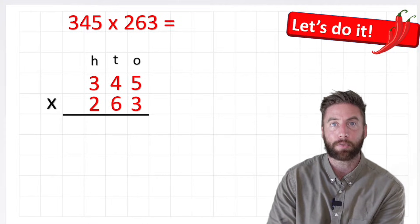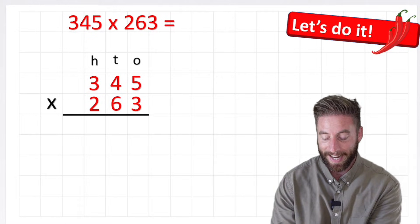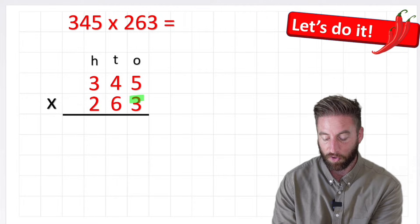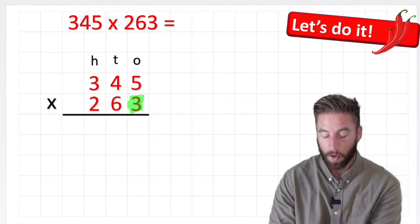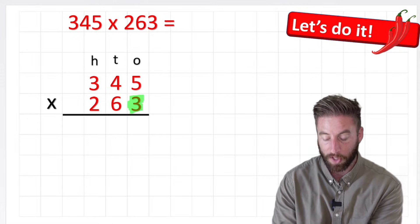My next step said to partition the question. Well, what does that mean? It means we're actually going to be looking at this question in different sections, and the first section is going to be looking at this 3 on the bottom row, and we're simply going to multiply this 3 by the number on the top row, which is 345.